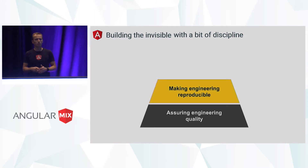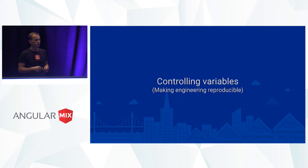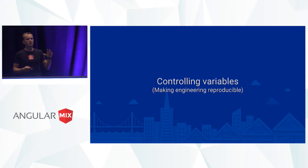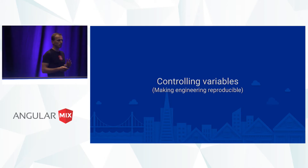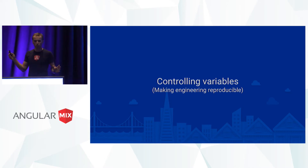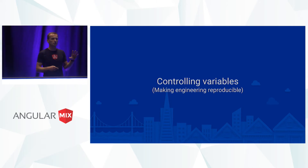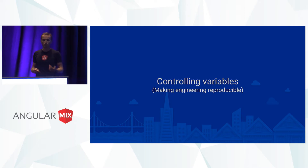The next area where there are good practices to be picked up is making engineering more reproducible, and this is usually done through controlling variables. When we are engineering, the whole process is taking input in the form of source code and some dependencies, running through some build process, and producing output. If for a given input we always get the same output, then our process is reproducible. However, if over time the output changes without us changing the input, then we don't have a deterministic setup — and this becomes very problematic and can cause chaos, especially in more complex projects.